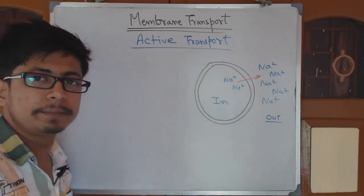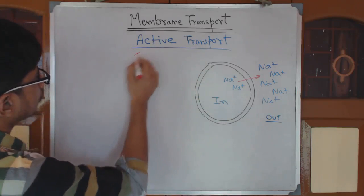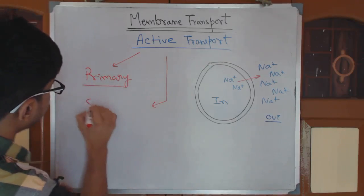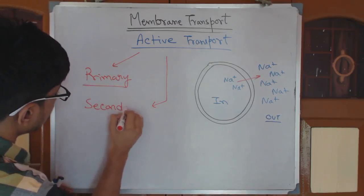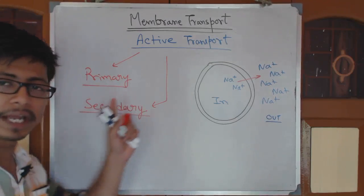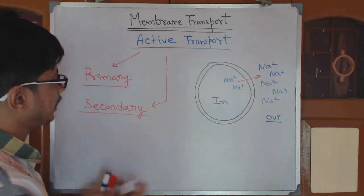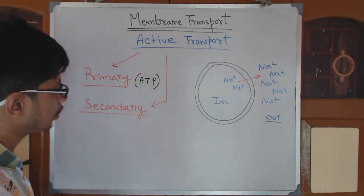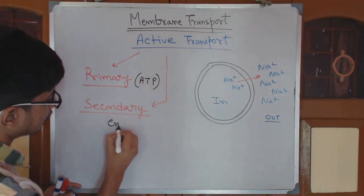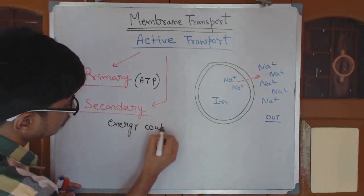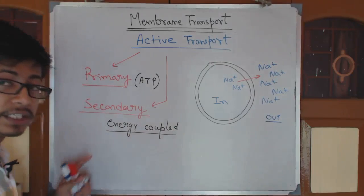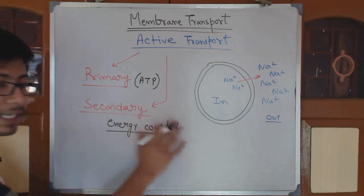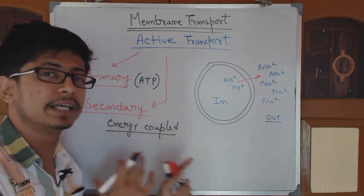Active transport can be of two different types. One is primary active transport and the other is secondary active transport. In primary active transport, we require a direct energy source — that is, the presence of ATP. While in secondary active transport, we use an energy-coupled process to drive the molecule.